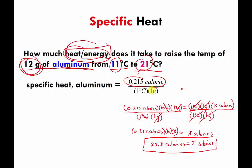So it takes 25.8 calories to heat up 12 grams of aluminum by 10 degrees Celsius. Basically, we said: it costs a certain amount to heat up 1 gram by 1 degree, but I have 12 times as much aluminum and I'm raising it by 10 times as many degrees, so it's going to cost 0.215 times 12 times 10, which is 25.8 calories. Don't worry about significant digits — just try to understand the concept.